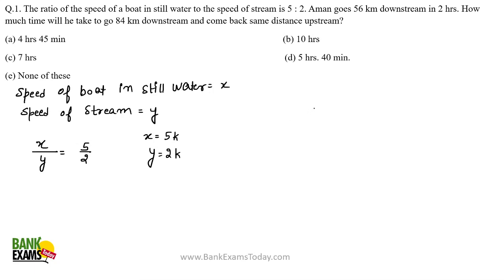Aman goes 56 kilometers downstream in 2 hours, so the speed of downstream (sd) = 56/2 = 28 km/h.